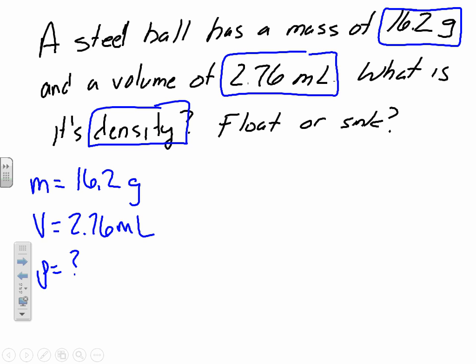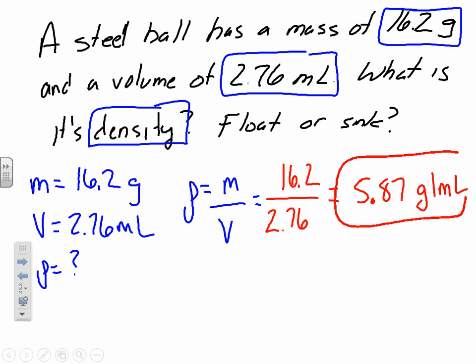Using everything that we know from rearranging it, density is equal to mass divided by volume. We're going to go ahead and plug everything in. 16.2 divided by 2.76. Our answer is going to have three sig figs. When you take 16.2 divided by 2.76, you're going to get 5.87 grams per milliliter. Is that greater than 1 or less than 1? It's greater than 1. So our steel ball will sink.